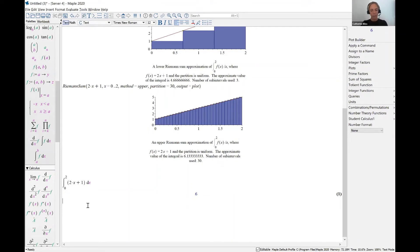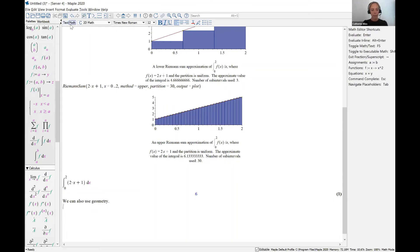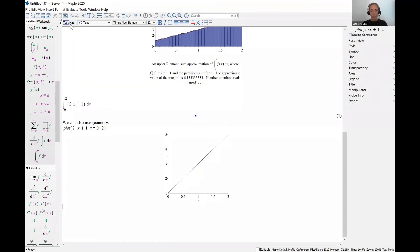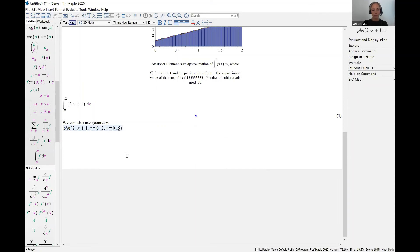Now, we could also use geometry. So let's plot our function. I'm going to be in math mode. And if we plot the function 2 times x plus 1 as x goes from 0 to 2, we see that we actually have a trapezoid. And maybe I'll set my y limits here so we can see those more clearly. y goes from 0 up to 5. That's fine.